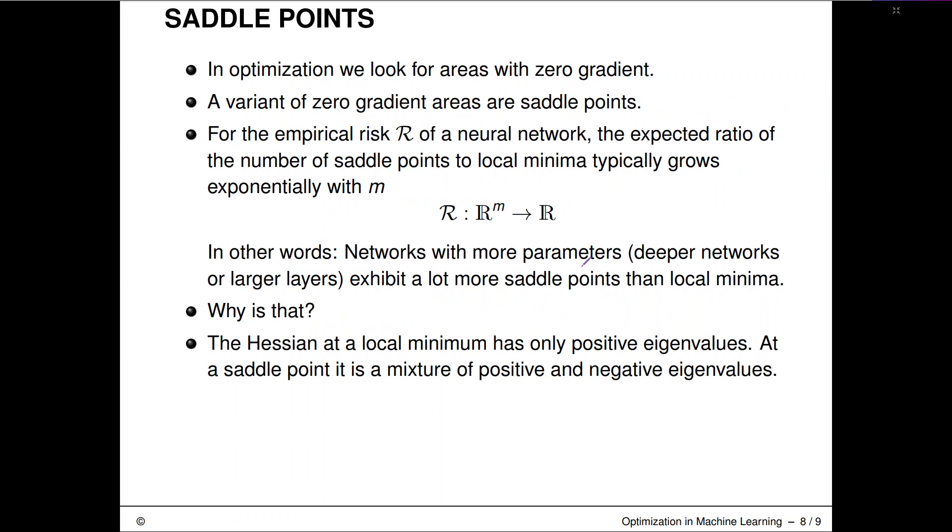Unfortunately, first order information is looking for stationary points with zero gradient. Our gradient descent algorithm can't really differentiate between a local minimum and a saddle point if it just looks for these stationary points.